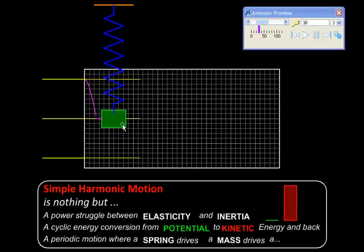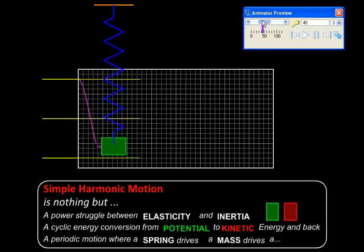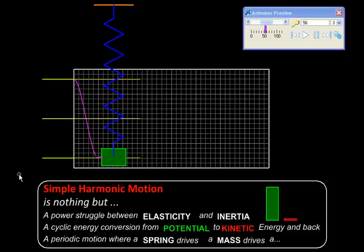So the mass refuses to stop and continues to move downward further like this. As the mass moves down, it stretches the spring, and the spring in turn applies upward force, thereby braking the mass till it stops completely in this position.